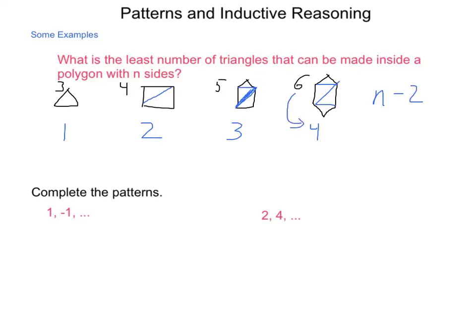We take the number of sides, and we subtract two. Six minus two is four. Five minus two is three. Four minus two is two. Three minus two is one.